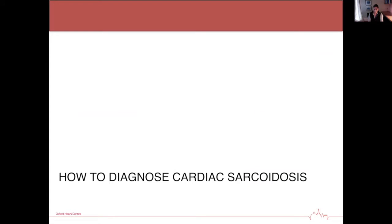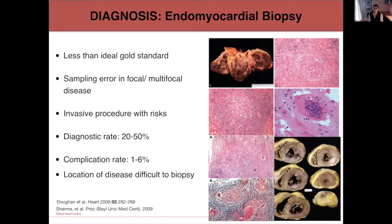Endomyocardial biopsy was the diagnostic gold standard, however there are a number of errors regarding the patchy nature of this condition's distribution, which can affect both the endocardium and the mid or epicardium, meaning the diagnostic hit rate from biopsy alone is actually quite low. Moreover, there's a complication rate of causing significant injury to the heart muscle and the vasculature. Most commonly we try to target an extra-cardiac site such as a lymph node to gain a histological diagnosis, but biopsy is far from ideal.